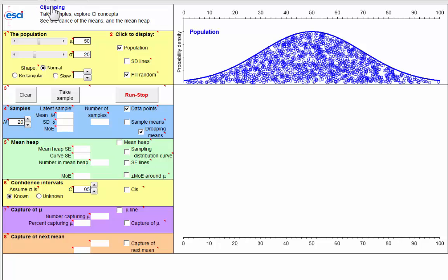Sampling. I'm at the CI jumping page in ESCI, and here is our population filled in, suggesting an infinite number of potential data points.